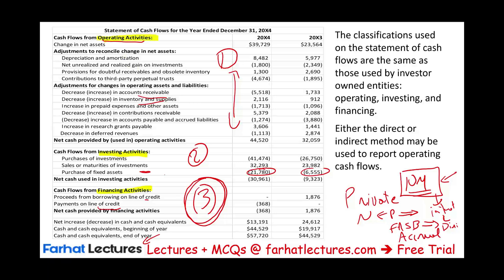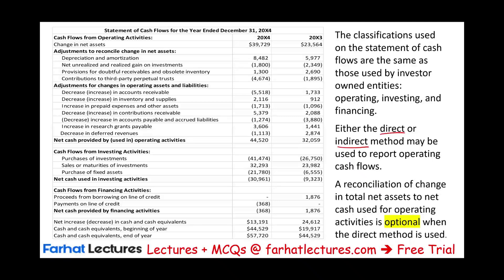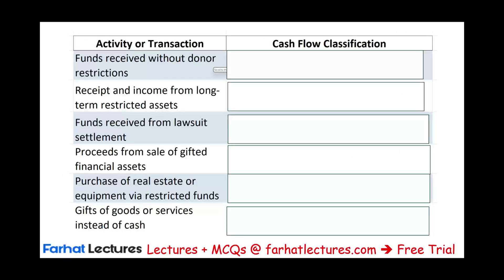You want to have a good idea of what goes under each category. Also important: we can use either the direct method or the indirect method when preparing the statement of cash flows. If we use the direct method for a not-for-profit, we do not have to prepare a reconciliation — which is in contrast to for-profit accounting, where a reconciliation is required when using the direct method.